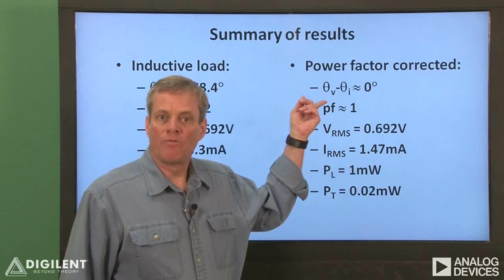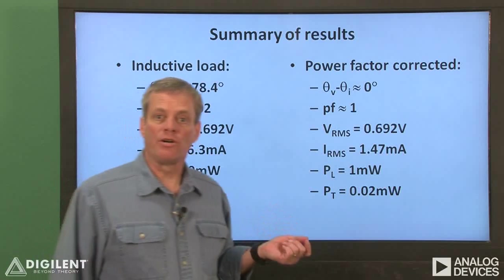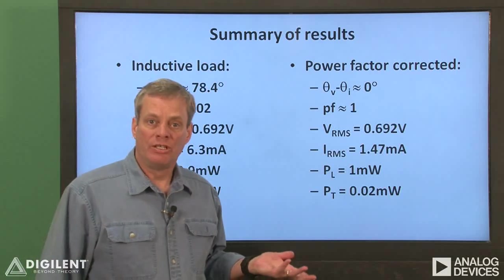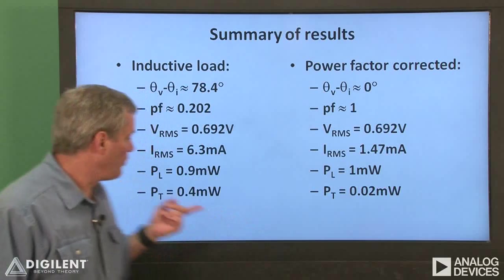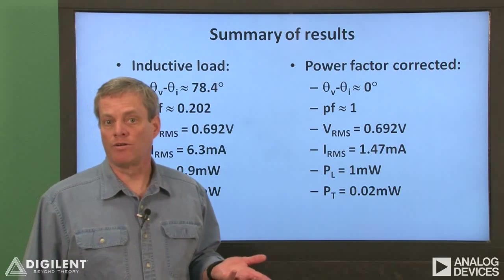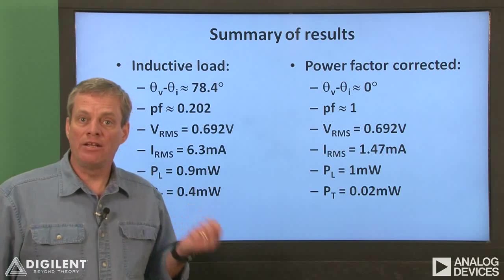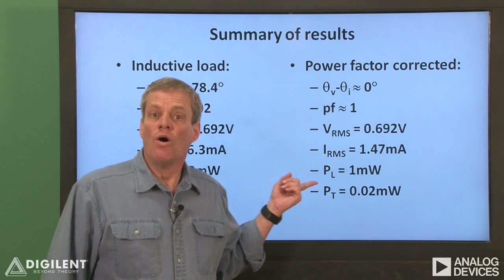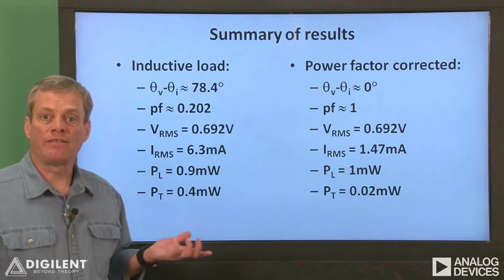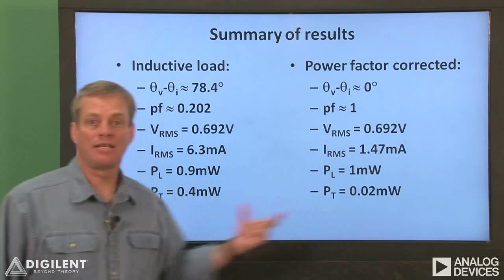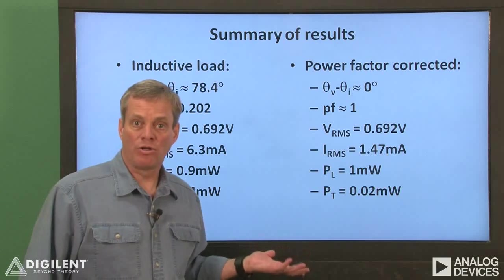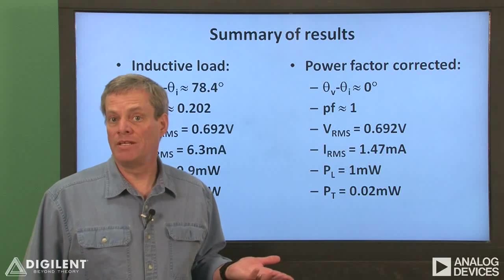Notice, as I mentioned previously, that the power factor is now close to 1. The amplitude of our current has also decreased drastically to about 1.5 milliamps. The average power we're delivering to the load is about the same as we had before. The difference between 0.9 milliwatts and 1 milliwatt is probably insignificant since it's difficult to measure these small currents accurately. The trick is that our increase in power factor has allowed us to reduce the load current while still maintaining the same average power to the load. Most importantly, however, is the fact that the transmission line losses have decreased drastically from 0.4 milliwatts to about 0.02 milliwatts. The power required to deliver power to the load is now only about 2% of the power being delivered. We can save a ton of money and energy with this kind of efficiency improvement.